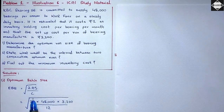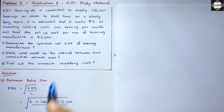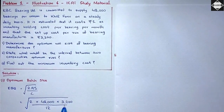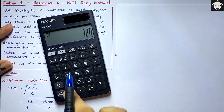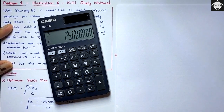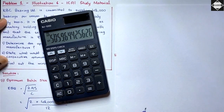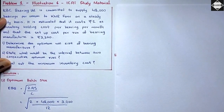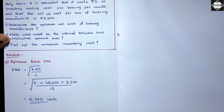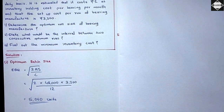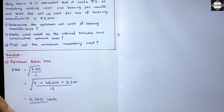Putting the values in: C = ₹12, A = 48,000, S = ₹3,200. So EBQ = √(2 × 48,000 × 3,200 / 12). Calculating: √(25,600,000) ≈ 5,059.6, which rounds off to 5,060 units. This is the most economic batch quantity — the optimum run size.